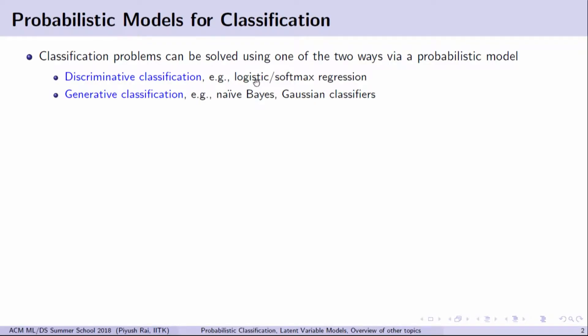The first approach is known as discriminative classification, and examples include logistic or softmax regression. These models are called discriminative because they formulate the classification problem directly in terms of classifying an example into one or more classes using a directly defined function. The other class of models used for classification are known as generative classification, where the goal is to do classification indirectly by coming up with a generative model for the data and using that to define a probability of a class given the input.